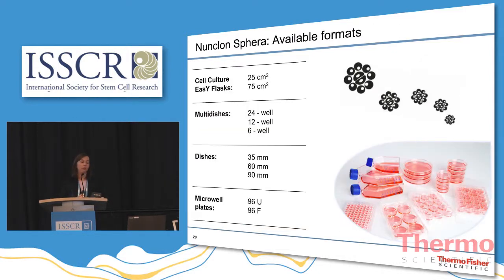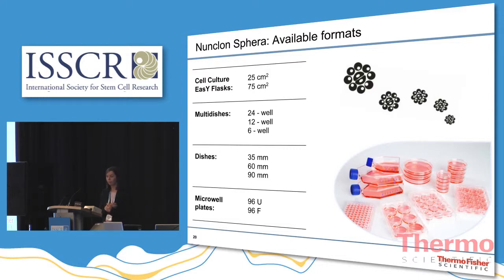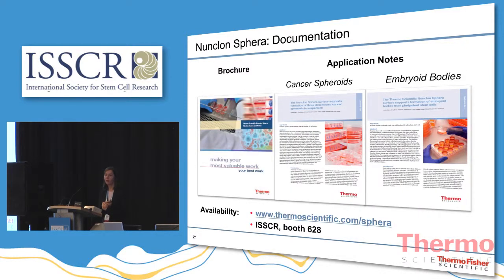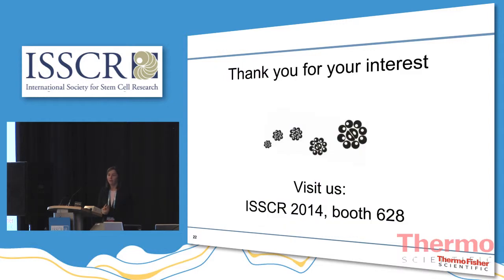Thermo Fisher Scientific offers Nunclone Sphere in a wide range of formats, both closed and open. The closed formats include cell culture EasyFlasks with a cell culture area of 25 or 75 square centimeters, a 24-well, 12-well, or 6-well multidish, a 35, 60, or 90-millimeter dish, and round-bottomed or flat-bottomed microwell plates. We also have a brochure and two accompanying application notes available online on the Thermo Scientific website, or you can collect copies at our booth.